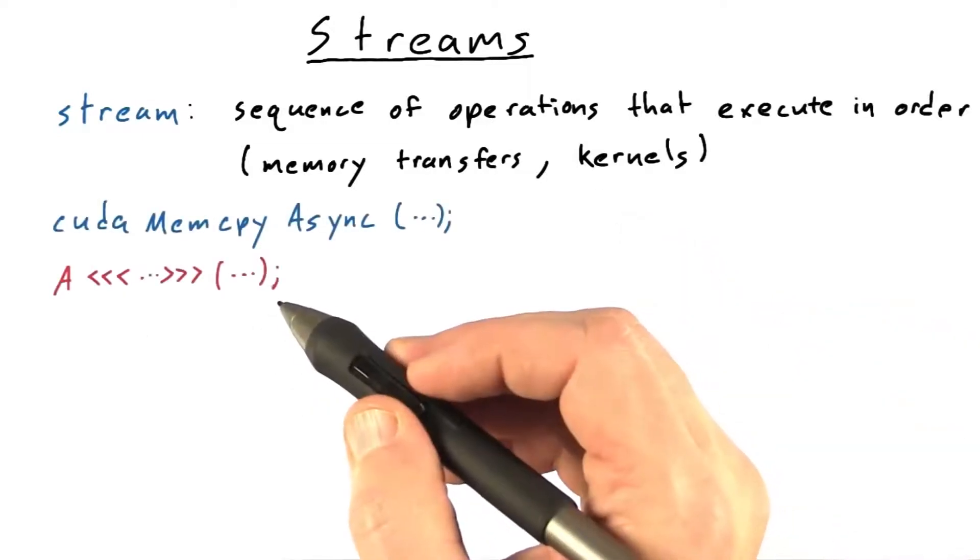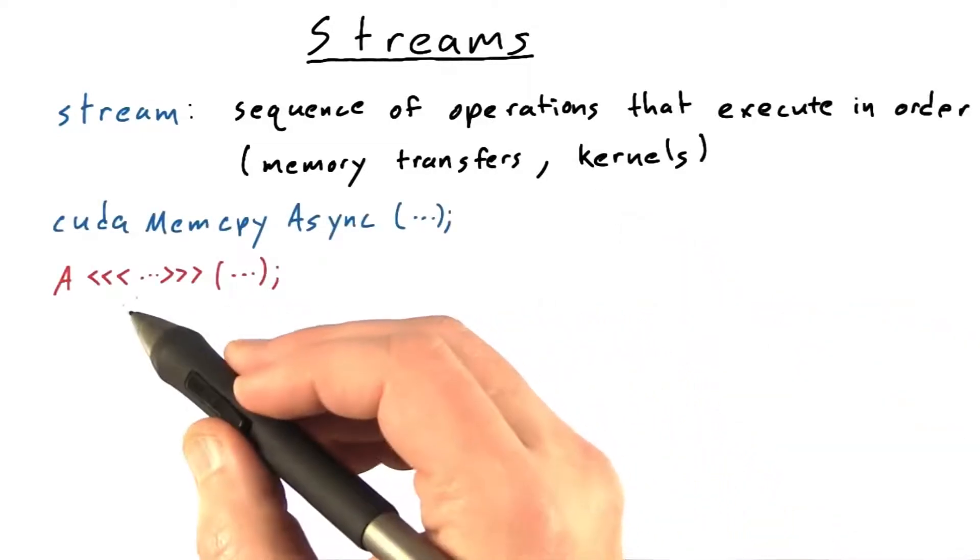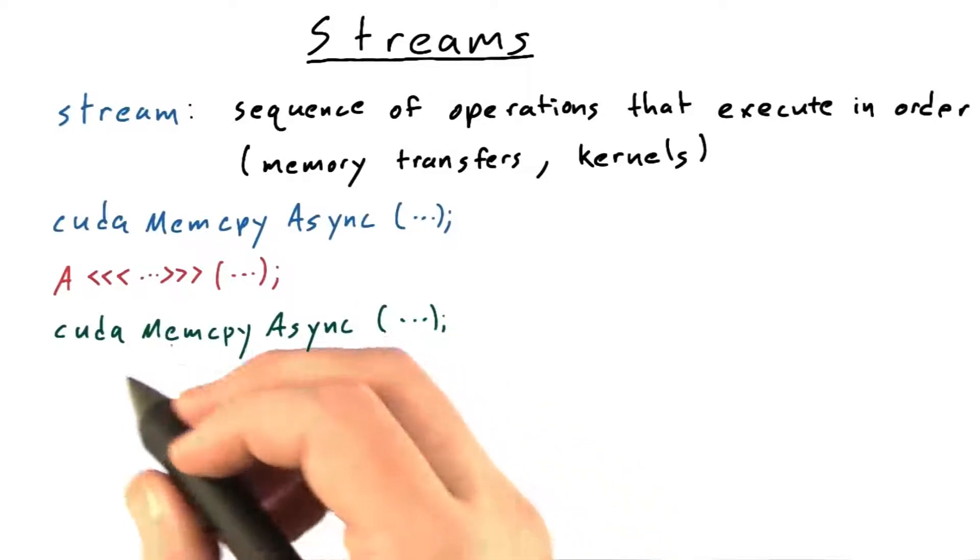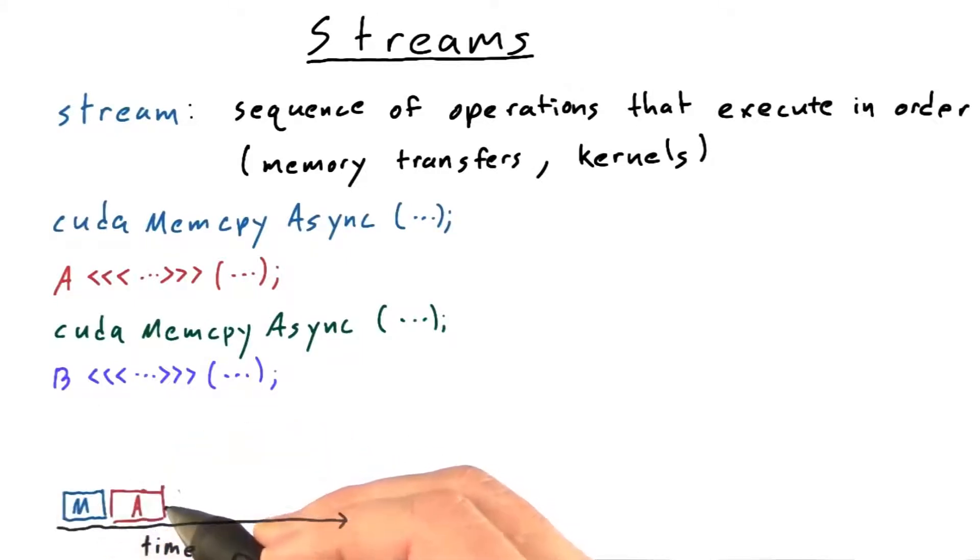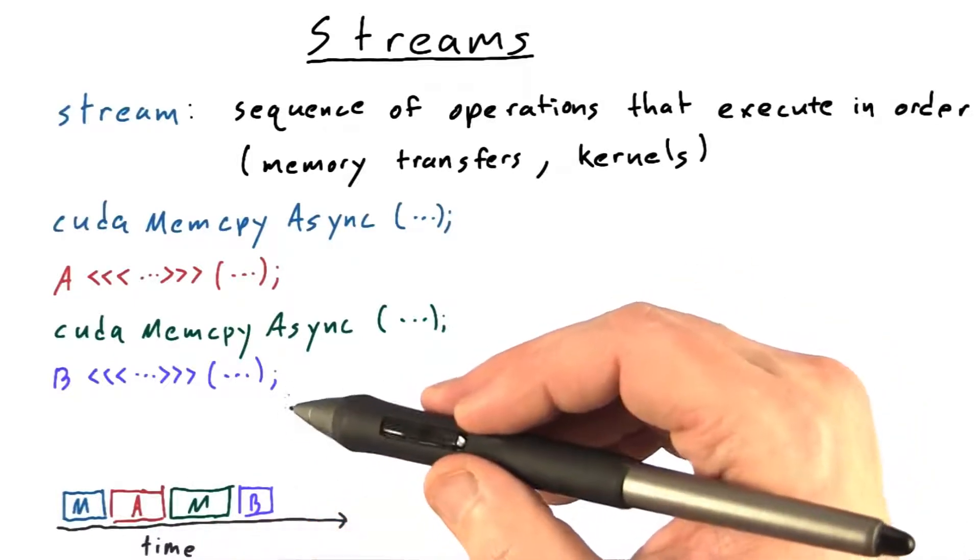If I perform a CUDA memcopy async, launch kernel A, then perform a second CUDA memcopy async, and then launch kernel B, then each operation completes before the next starts. So the first memcopy happens, then kernel A runs to completion, then the second memcopy happens, and then the second kernel runs.